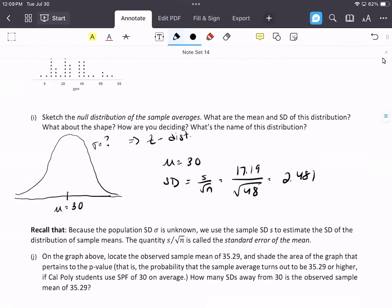Recall that because the population standard deviation is unknown, we use the sample standard deviation S to estimate the standard deviation of the distribution of sample means. This is called the standard error of the mean.